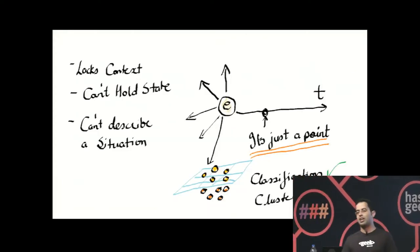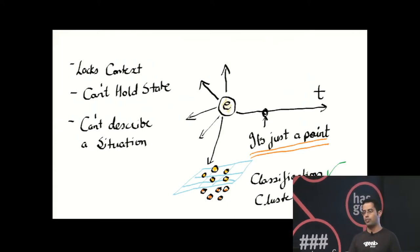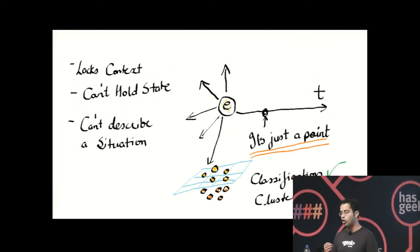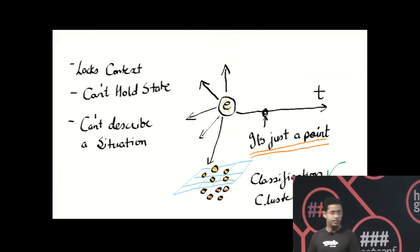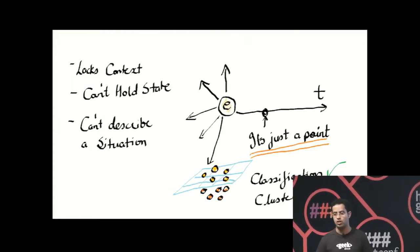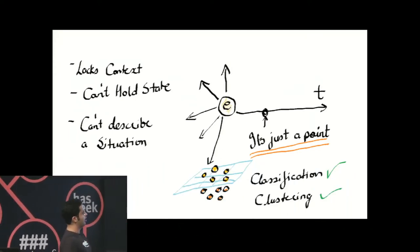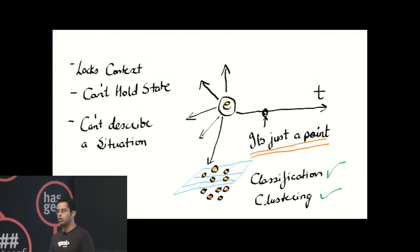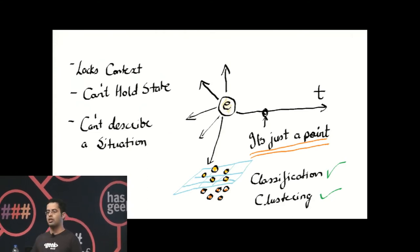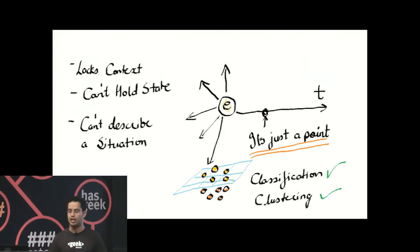If you see what an event is at the end of a day, it lacks context. It just talks about itself at a particular time instant. It also cannot describe a situation. A situation to a human mind is the way we process an event. And it cannot hold state. It just tells you about its current state, not the history of state or how state change has occurred.